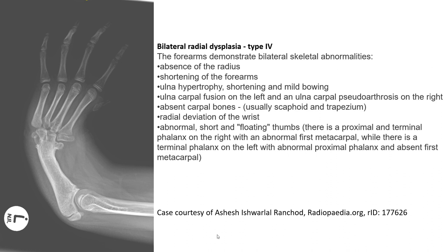This is the case of ulnar hemimelia type 4. The forearm demonstrates bilateral skeletal abnormality: absent radius, shortening of the forearm, ulnar hypertrophy, shortening and mild bowing, ulnar carpal changes on the left and ulnar carpal arthrosis on the right, absent carpal bone, radial deviation of the wrist, and abnormal short floating thumb.